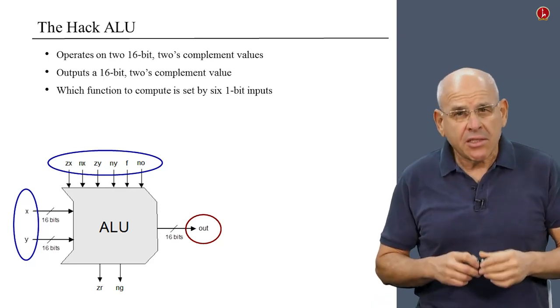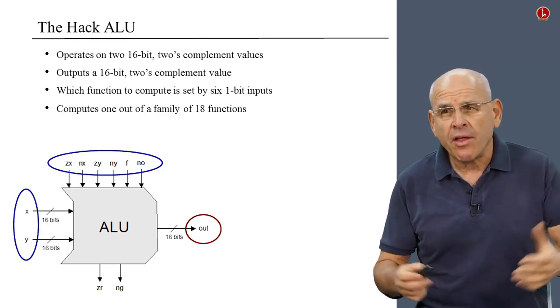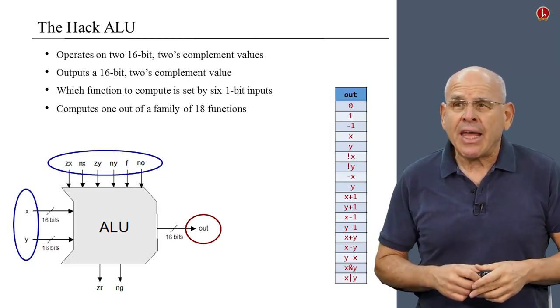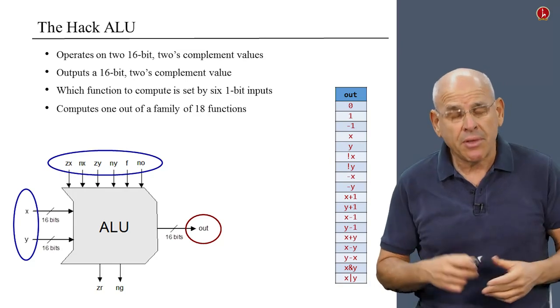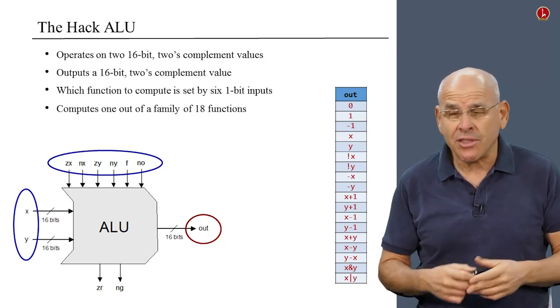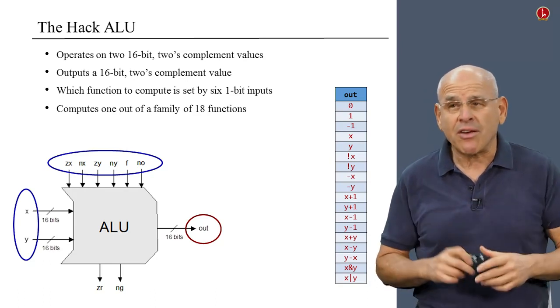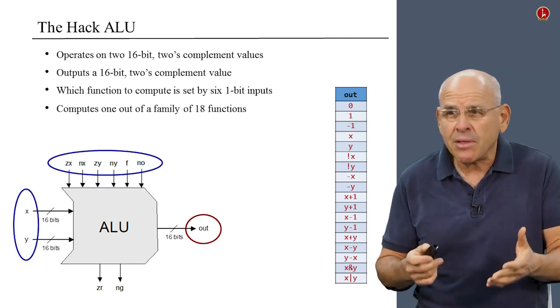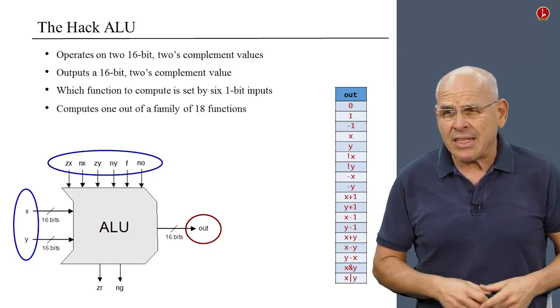Based on these six control bits, the ALU computes one out of the following 18 functions of interest. And I call these functions of interest because in principle, the ALU can compute many more functions. But we've decided to focus on these 18 functions only. Some of these functions are very simple, like the constants 0, 1, minus 1, x, y, and so on.